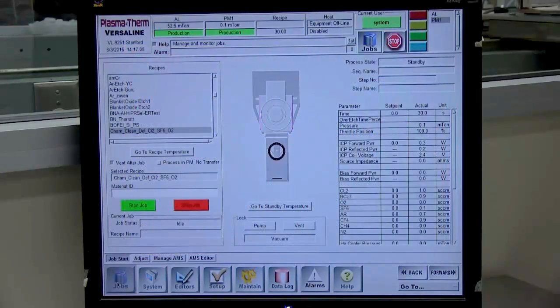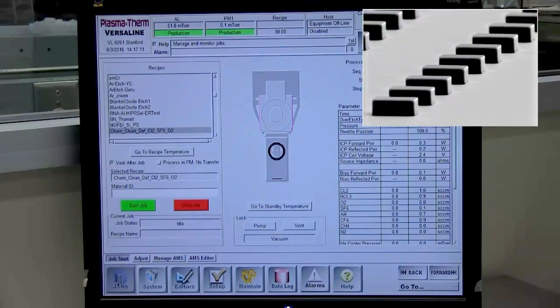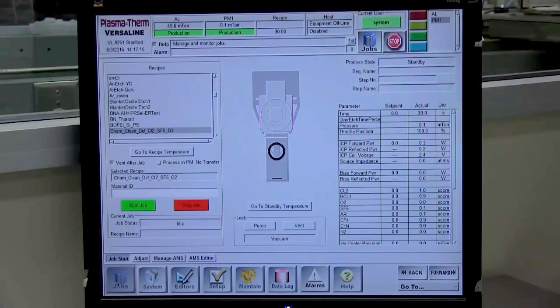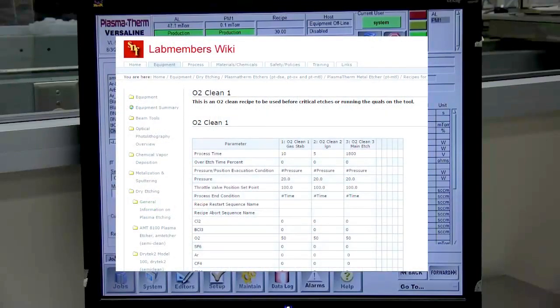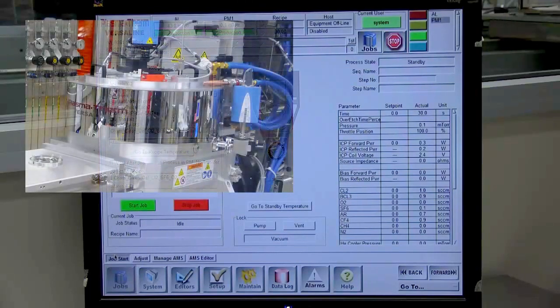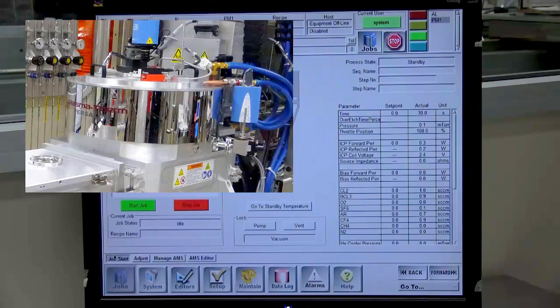As many different materials are processed in the Plasmatherm Metal Etcher, chamber clean and conditioning with a silicon dummy wafer are recommended before the actual etch process. Standard clean recipes are available in the recipe pages. Clean step times can be changed as needed. For chamber conditioning, use the recipe that will be used for processing the device wafers.